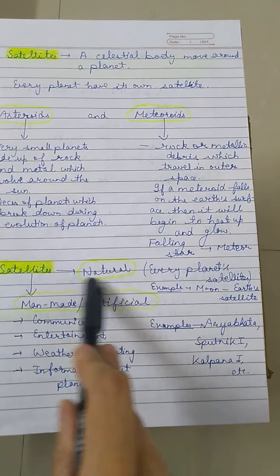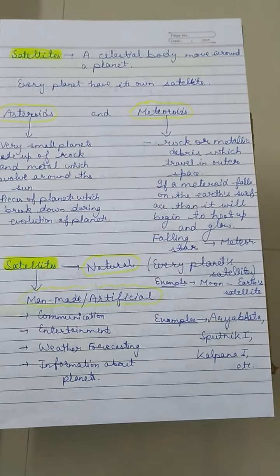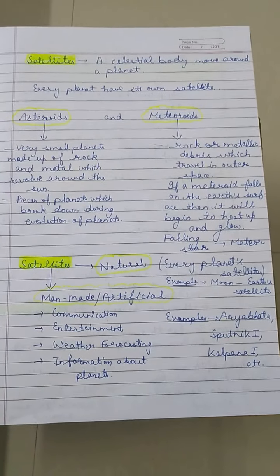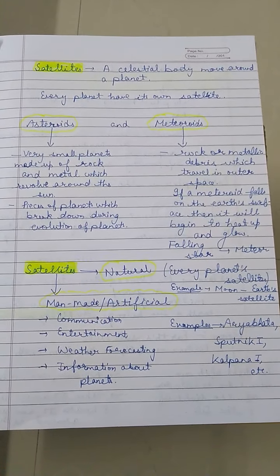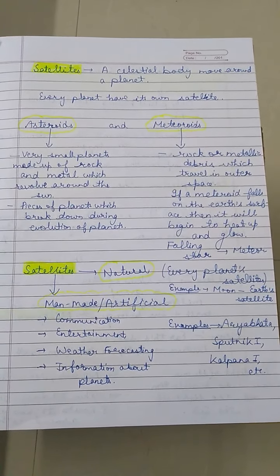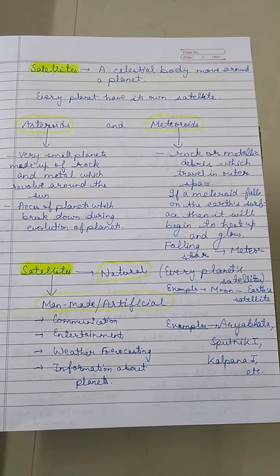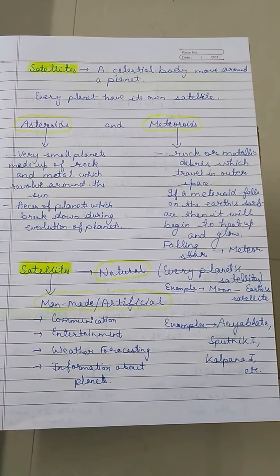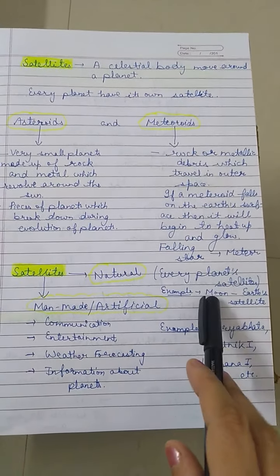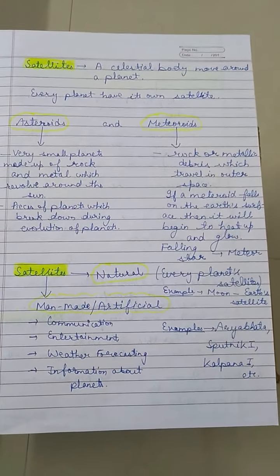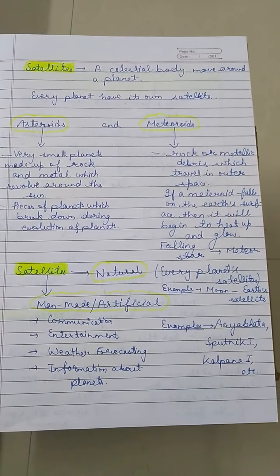Firstly, natural satellites. As we have discussed earlier, every planet has their own satellites, so these satellites come under the category of natural satellites. For example, the Moon — the Moon is the Earth's natural satellite.